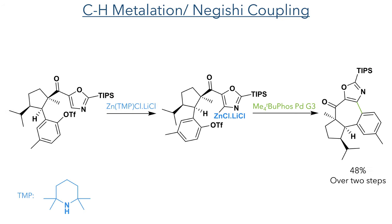In the next step of the synthesis, another C-H activation was carried out, this time using a zinc tetramethylpiperidine chloride complex. This is a methylation reagent capable of functionalising very sensitive molecules, and in this case selectively inserted into the carbon-hydrogen bond of the oxazole ring. This formed a methylated species that could undergo a Negishi coupling together with the triflated aromatic ring to form the central seven-membered ring in a 48% yield over two steps.